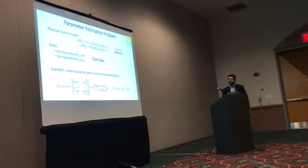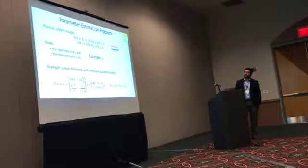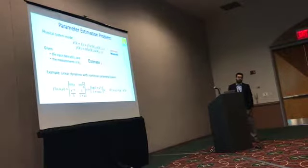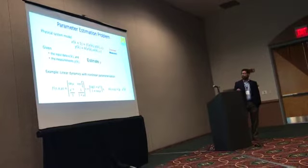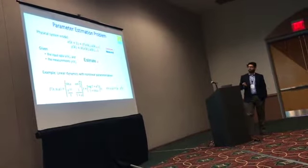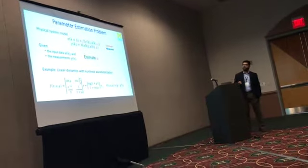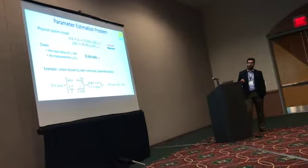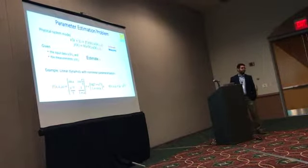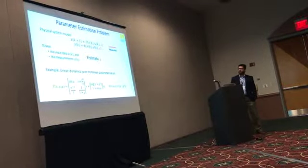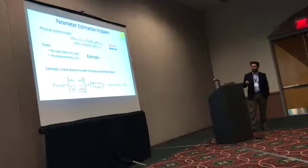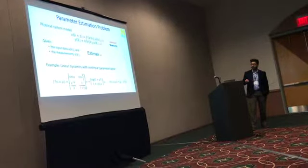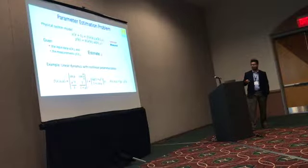More precisely, the problem is: we have a physical system evolving under dynamics map F and output map H, parameterized by unknown parameter mu — which can be a scalar or vector. Given input data U and measurements Y, along with the functional forms of F and H (not the parameters), we want to estimate mu. For example, a linear dynamics system nonlinearly parameterized by mu, where the A matrix, B matrix, and C matrix are all nonlinearly dependent on mu.